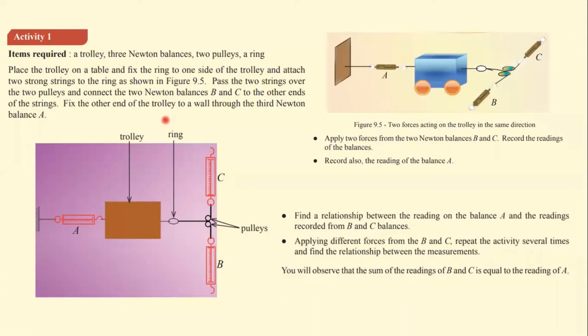This is Activity 1 in your textbook. Items required: a trolley, three Newton balances, two pulleys, and a ring.